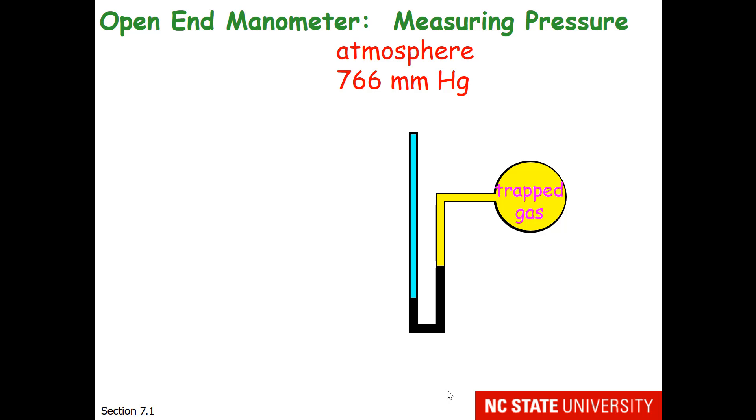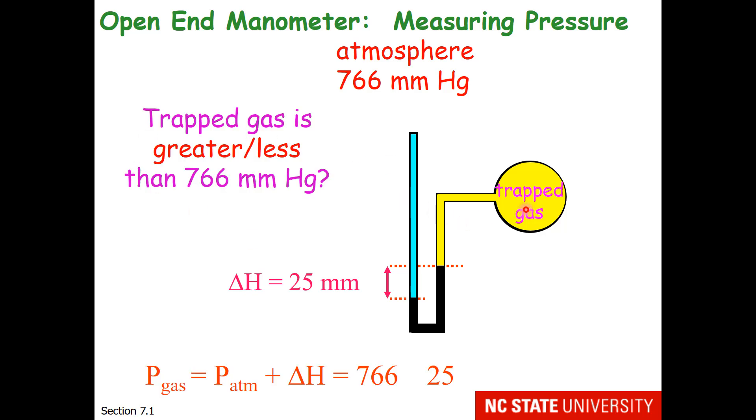Here's a different scenario. This time when we look at the liquid in the U-tube, it's higher on the trapped gas side. The height difference for this example is 25 mm. So is the trapped gas at greater or less pressure than 766 mm of mercury? Do I add or do I subtract?